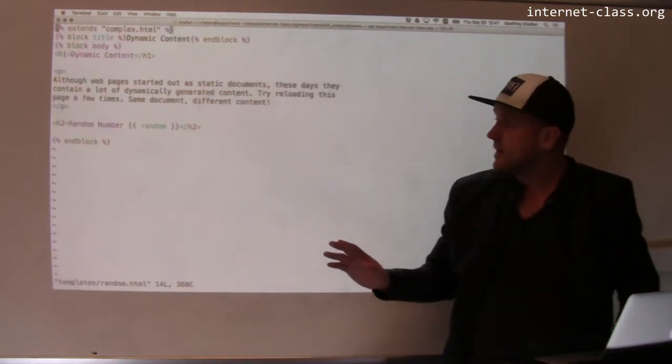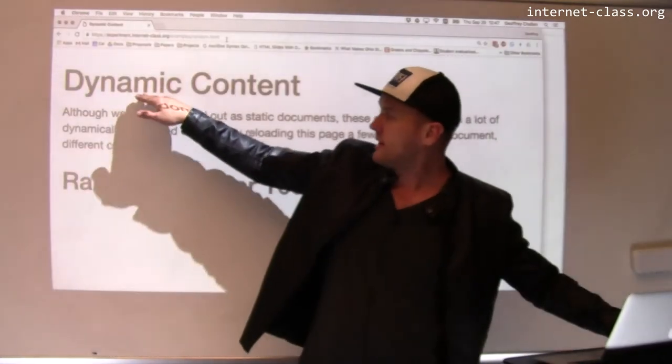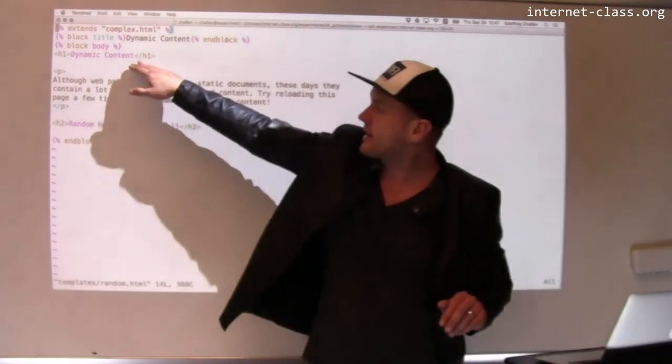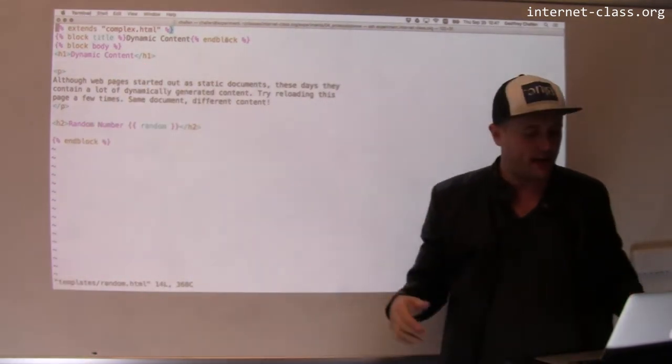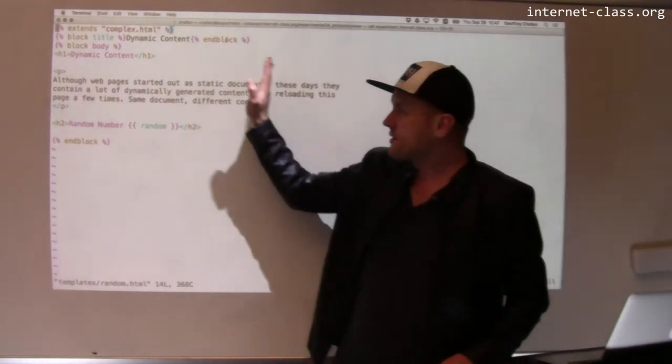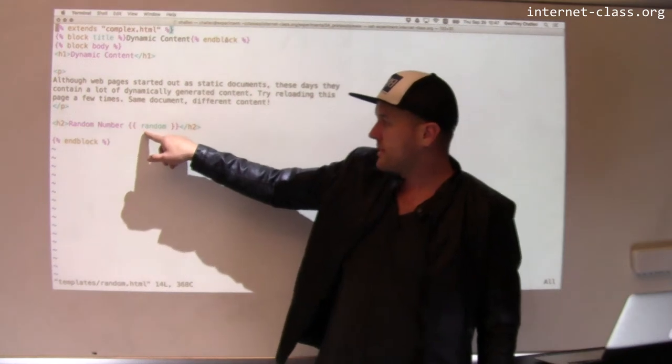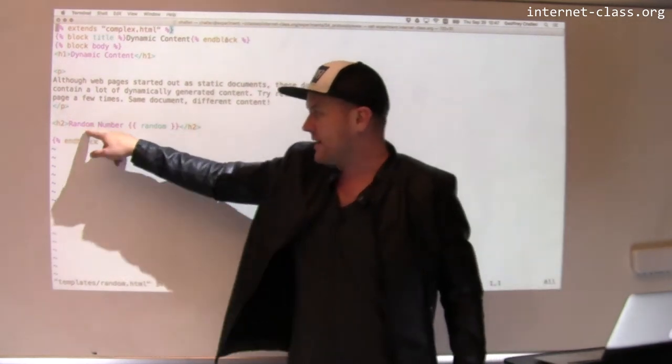Here's the template. It has the content for the page. So you can see this is the H1 dynamic content right here. This is the paragraph that's on the page. Although web pages started out as static documents, this is all stuff about the page that's not changing. And then here's this one bit of the page that is changing. So it's random number.